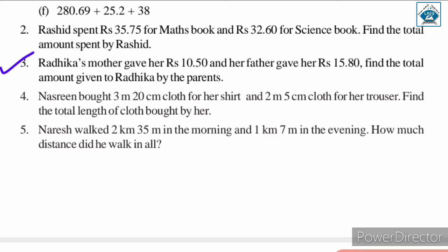Question number 3: Radhika's mother gave her rupees 10.50 and her father gave her rupees 15.80. Find the total amount given to Radhika by the parents. We need to find the total, so we will add these two amounts. This question is homework for you — solve it on your own and write the solution properly in your notebook.